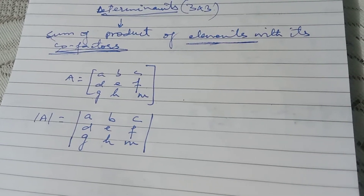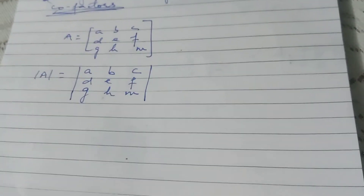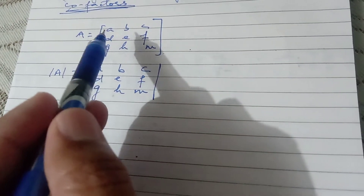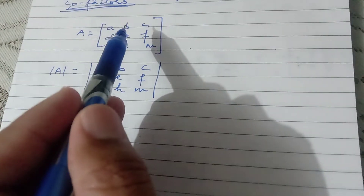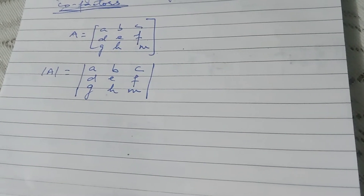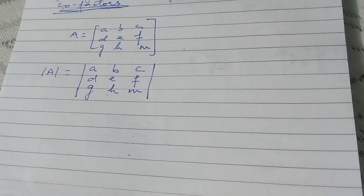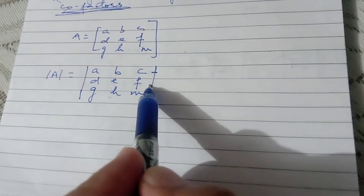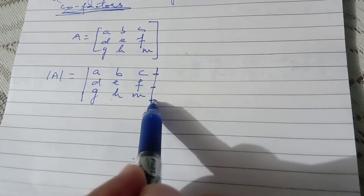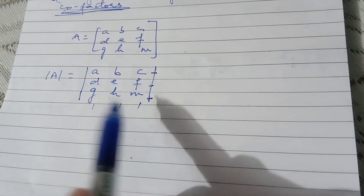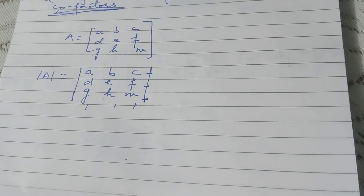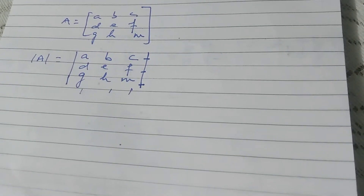For a 2x2 matrix, it was very simple — there were four elements, we took the principal diagonal minus the secondary diagonal and that was it. Now for a 3x3 matrix, you can expand it with any row or any column. We have R1, R2, R3 — that's 3 rows — and C1, C2, C3 — that's 3 columns — so in total there are 6 ways to expand it. First I will do the simple traditional way using Row 1, then we'll discuss another, and you will practice the rest.